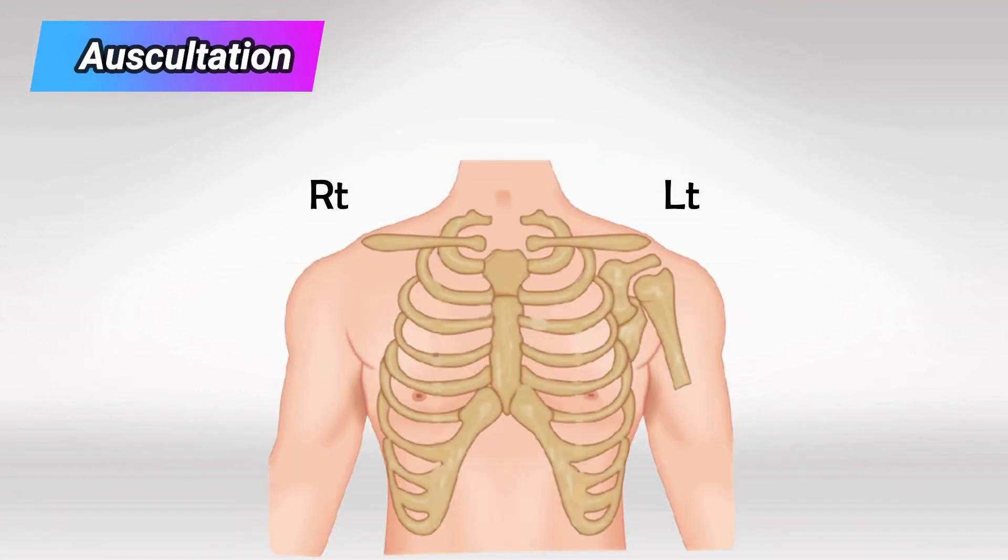To better appreciate the murmur, place the stethoscope in between the fourth and fifth left intercostal space, and here's what it sounds like.